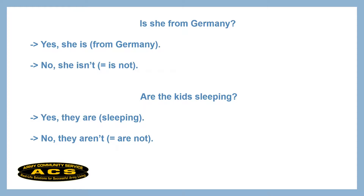One way to ask a question is with a form of 'to be.' I use 'is' if the person is third person singular — he, she, it. For example, I could ask: Is she from Germany?